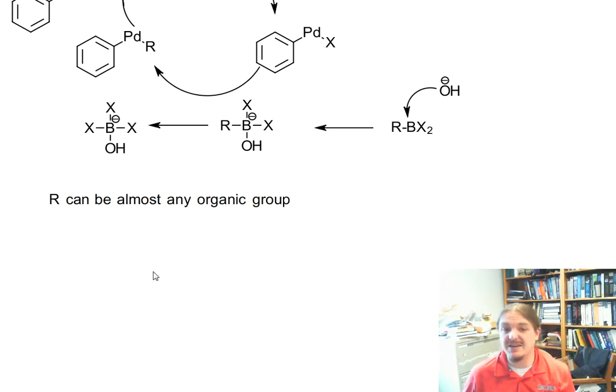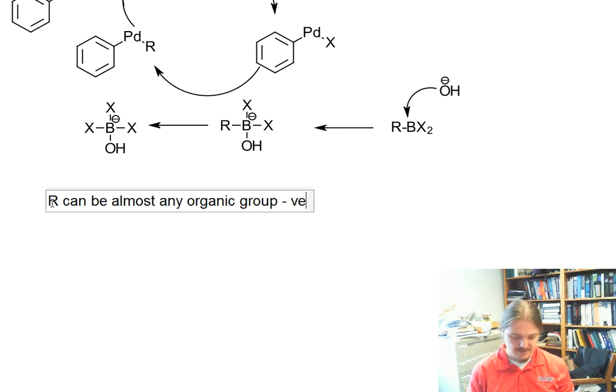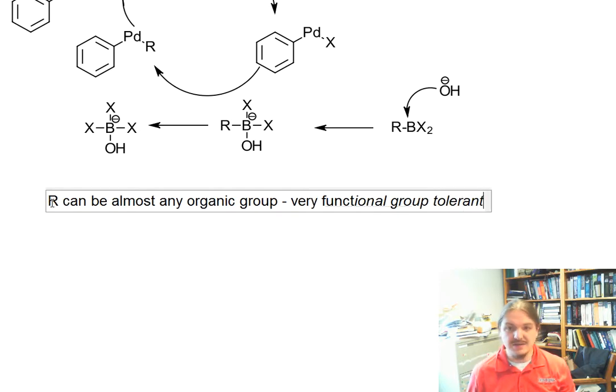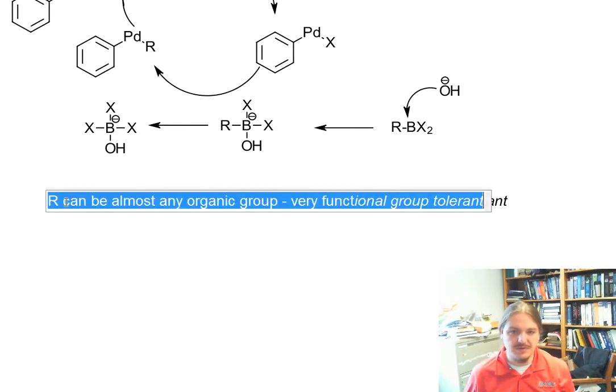But R can be almost anything. I mean, there's some things it can't be, but this reaction is very tolerant of functional groups. The arene can have lots of functional groups on it as well.